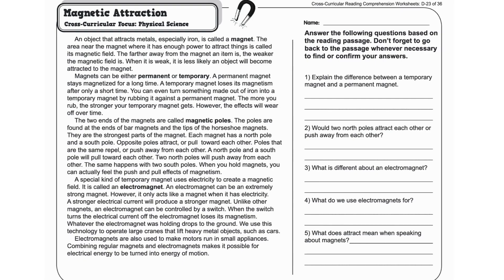Opposite poles attract, or pull toward each other. Poles that are the same repel, or push away from each other. A north pole and a south pole will pull toward each other. Two north poles will push away from each other. The same happens with two south poles.